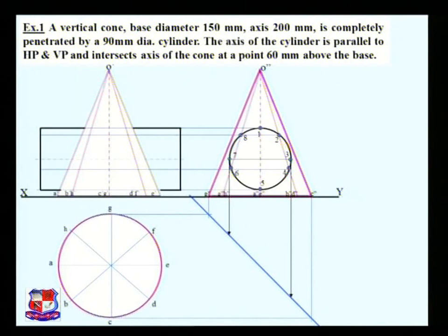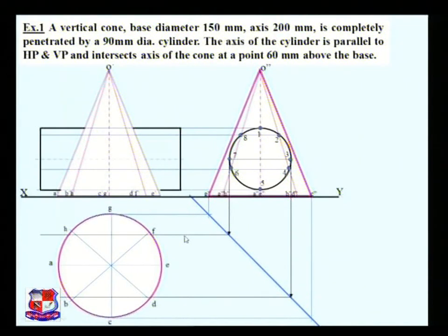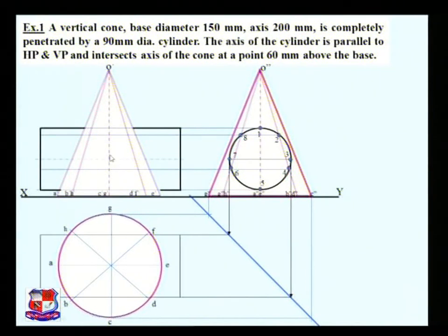Take projections from the front view to the miter line — vertical lines from points 3 and 7 — which cut the miter line at two points. From those points draw horizontal lines to locate the end points of the cylinder in the top view. We can also mark points at a distance of half the cylinder length. If the length is not given, assume a length — say 100 mm or 200 mm. If 200 mm is assumed, then the distance would be 100 mm on either side. Now find the points of intersection between the cylinder and the cone.